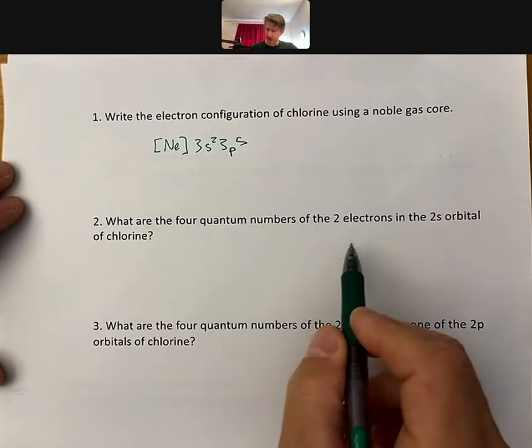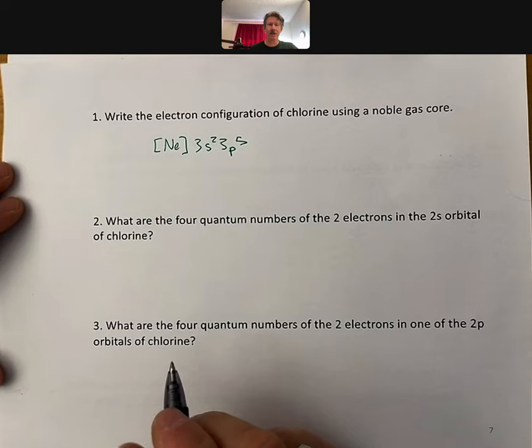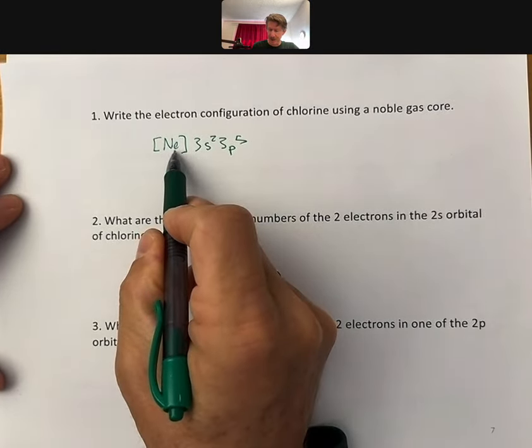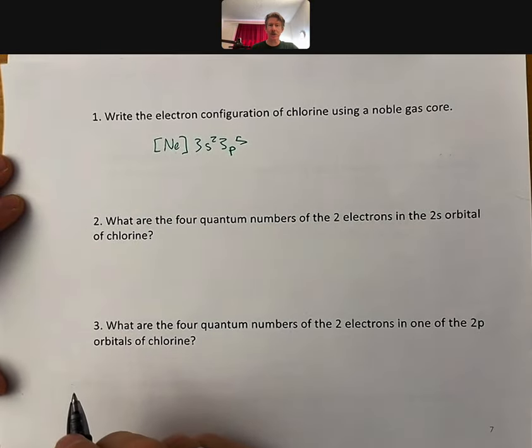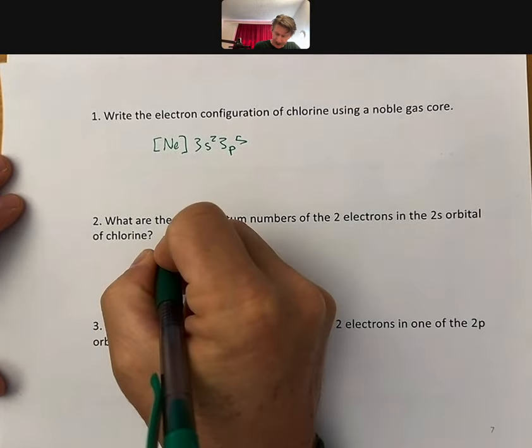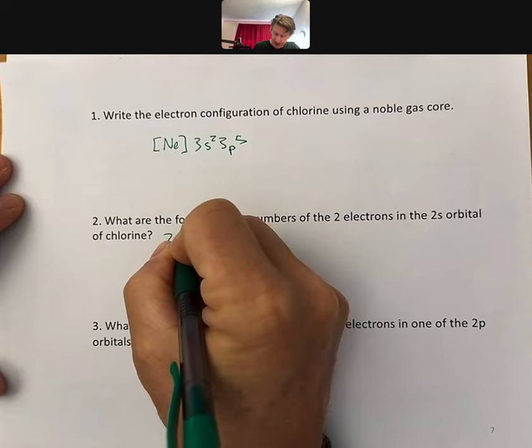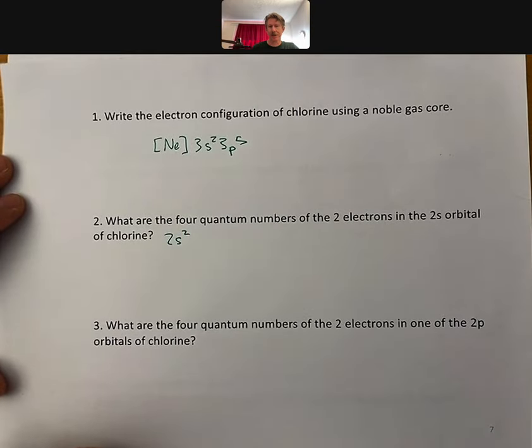So what are the four quantum numbers of the two electrons in the 2s orbital of chlorine? Well, the 2s electrons are part of the noble gas core. So 2s, and so it would be 2s2 in part of that noble gas core.